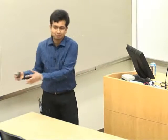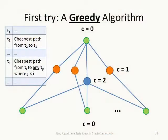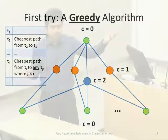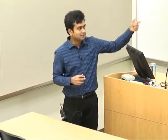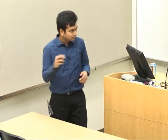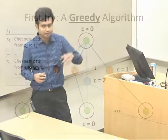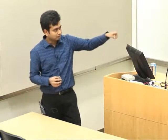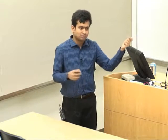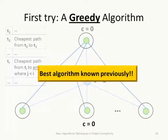The focus is on competitive ratio rather than running time. A natural greedy algorithm connects each new terminal via the cheapest path to any previous terminal. However, this performs poorly: it can cost O(n) while the optimal solution costs O(1). For example, if all terminals connect through one central node costing 2, greedy buys n separate paths instead. Surprisingly, no sub-polynomial competitive algorithm was previously known for the online Steiner tree problem.